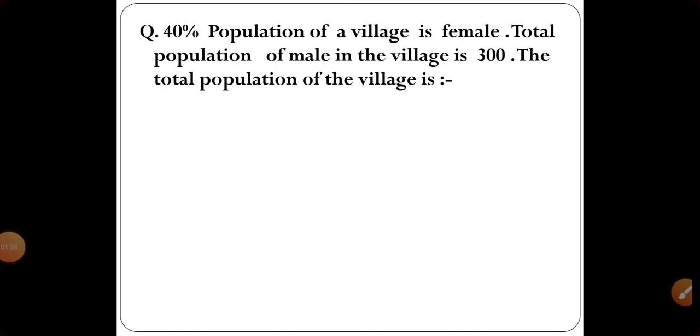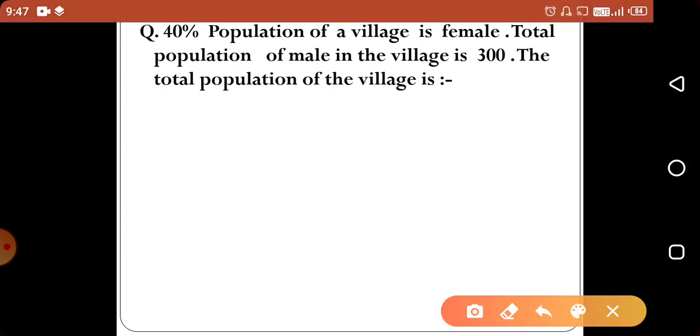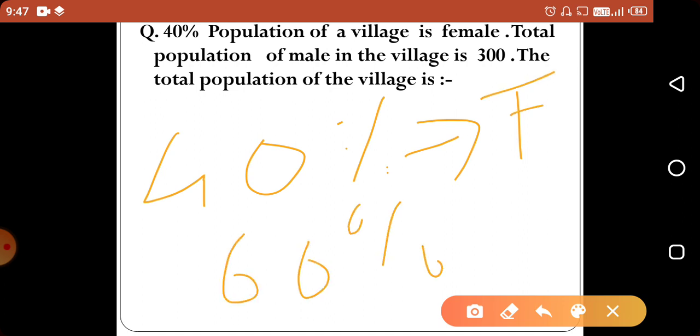40% population of a village is female. The total population of male is 300. Let me tell you the logic. If 40% is female, what will be 60%? Male will be 60%.